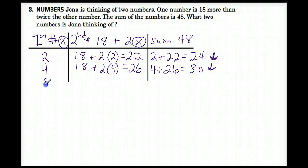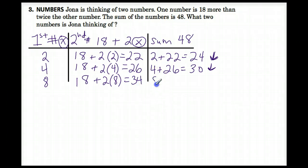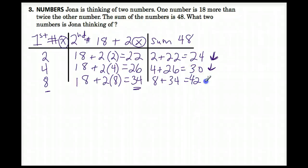Let's try doubling it again — try 8. If the first number is 8, our second number is 18 plus 2 times 8, which is 16 plus 18 = 34. Does 8 plus 34 equal 48? No, that equals 42. We're still too low.